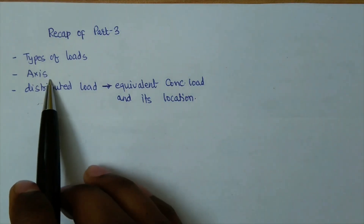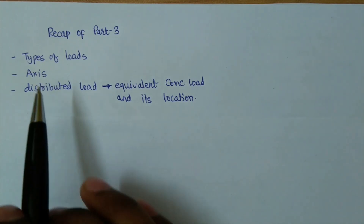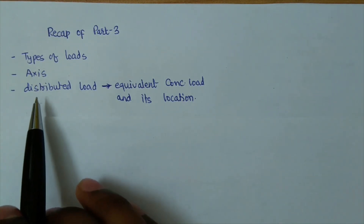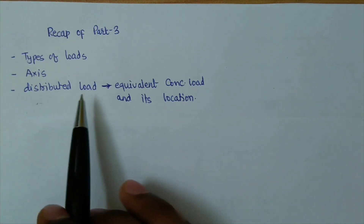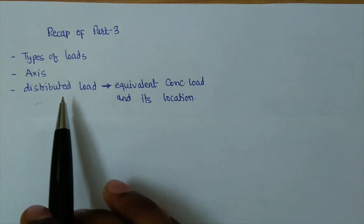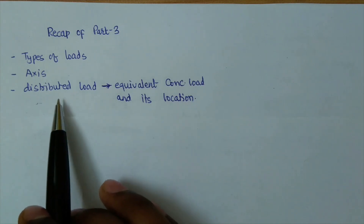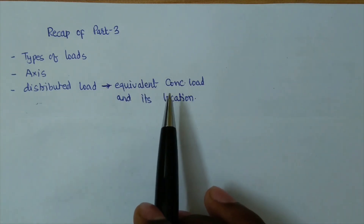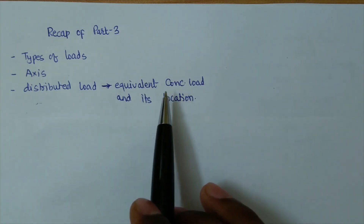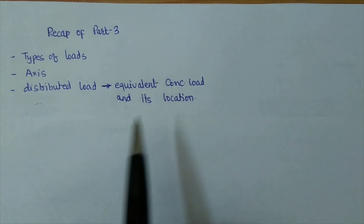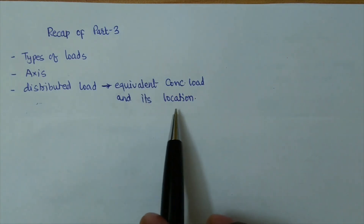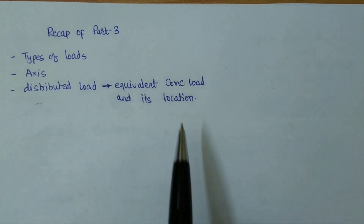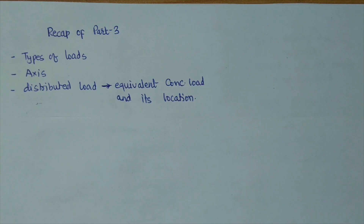Then we talked about the axis, which can be a longitudinal axis or a transverse axis. After that we discussed how to convert a distributed load into an equivalent concentrated load, which is equal to the area of that particular geometry, and its location is the centroid of that geometry.